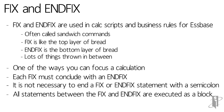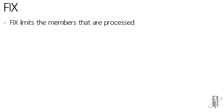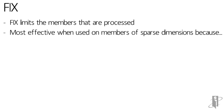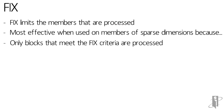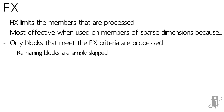You can't assume that stuff between the FIX and the END FIX happens in a certain order. FIX works by limiting the members that are pulled into memory. When Essbase encounters a FIX statement, it'll look for the sparse combinations of members in that FIX. It'll go to the index and say I don't care about any of the other slices or blocks in the database — I only want you to send me these FIX combinations. It pulls those blocks into memory, simply skips all the other blocks, and just calculates the stuff between FIX and END FIX on that set of blocks.